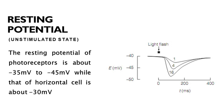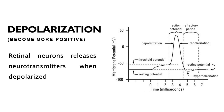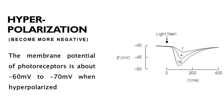Photoreceptors are depolarized in dim or dark conditions. Depolarization means the membrane potential becomes more positive. Retinal neurons release neurotransmitters when depolarized. Hyperpolarization means the membrane potential becomes more negative. The membrane potential of photoreceptors when hyperpolarized is about minus 60 millivolts to minus 70 millivolts. Photoreceptors are hyperpolarized by light, and retinal neurons release little or no neurotransmitters when hyperpolarized.